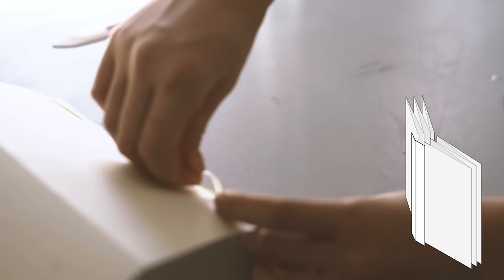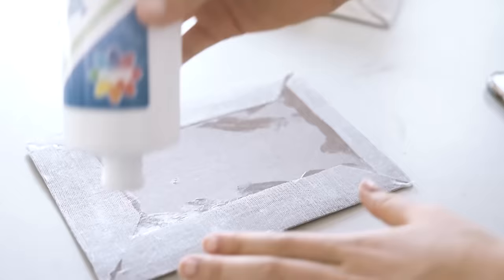So to connect the folded papers onto the board, you just add a little more glue. And basically paste it down onto that board.